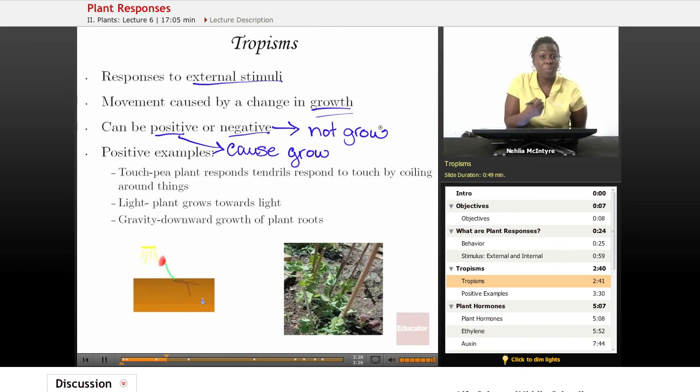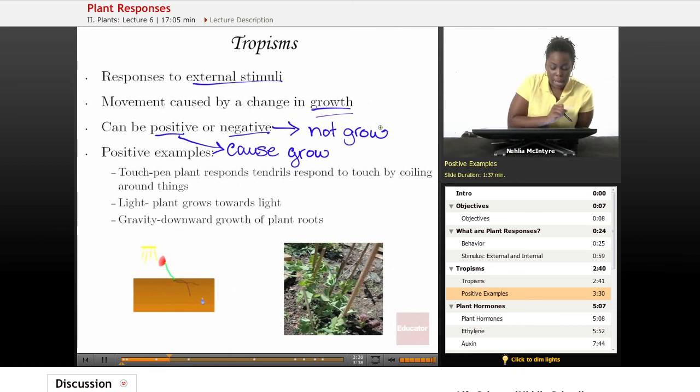Again, tropisms are responses caused by external stimuli. Here are some examples of tropisms. We'll just talk about the positive examples for this lesson. For example, a touch would be a tropism, and a pea plant that responds to touching, for example, this stick here. Here are some pea plants.